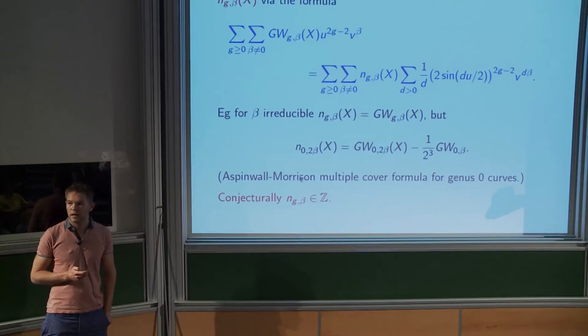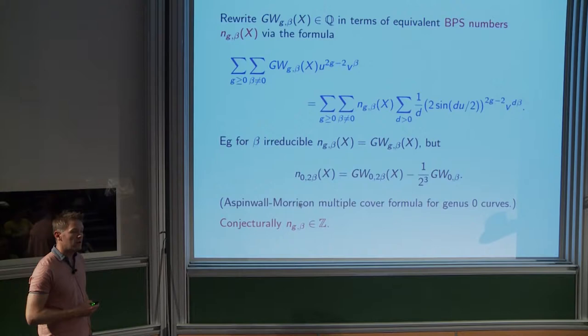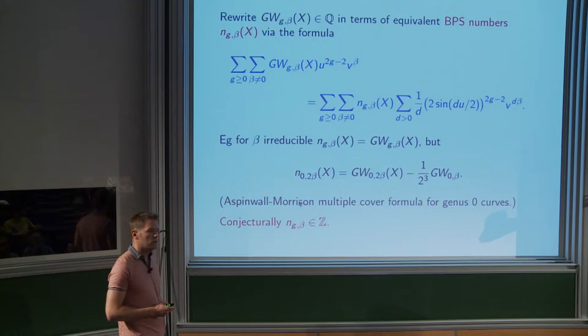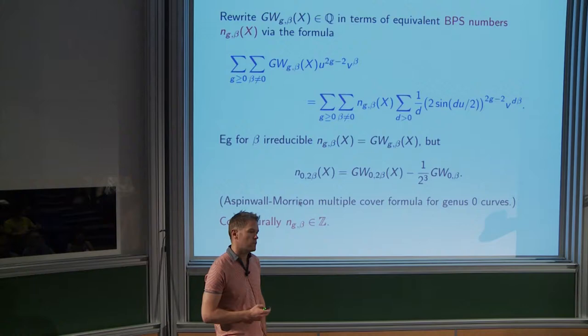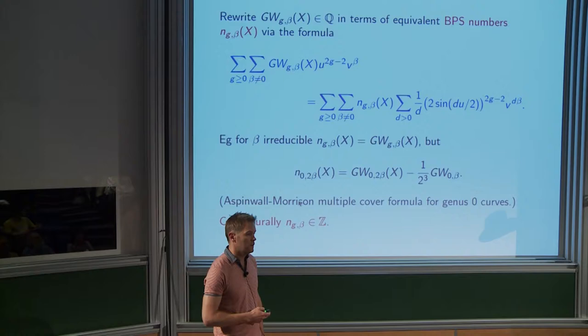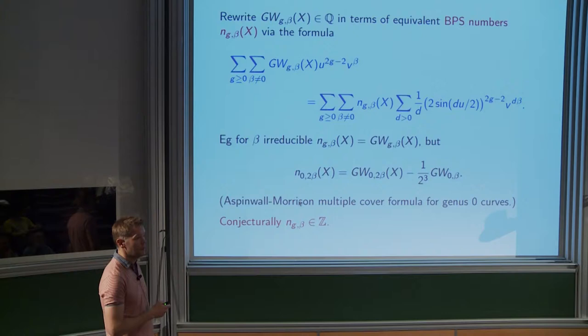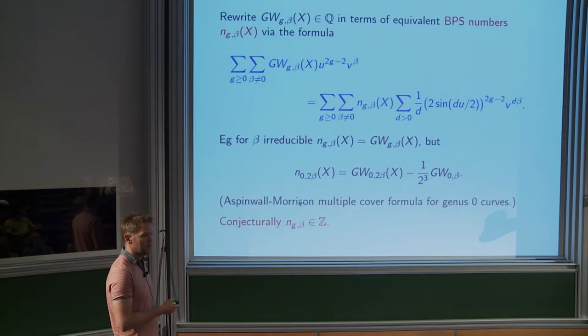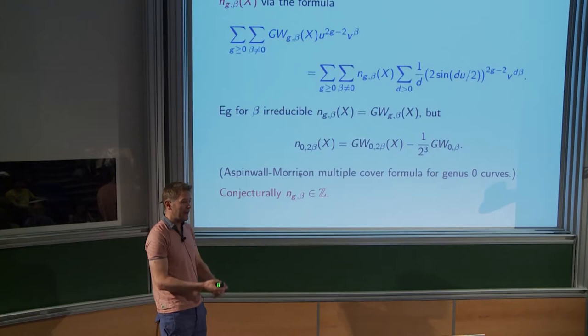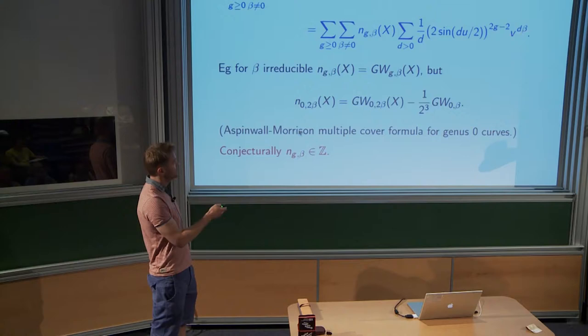So that's Gromov-Witten theory done. A question: are there also denominators from the genus, like in genus one from the moduli space itself? If you look at genus one, there might be denominators from constant maps into a constant. Yes, integrals over moduli space of curves — they're all in there. In the cubic example I had, those are all encoded in there, and the conjecture is that they all go away once you do this BPS rewriting.